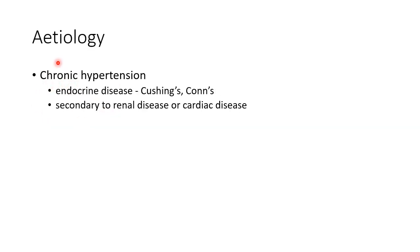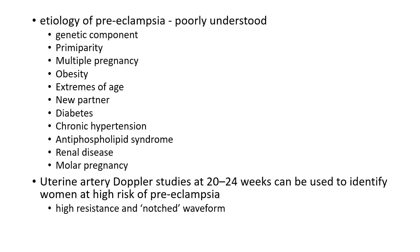Chronic hypertension can occur due to endocrine disorders like Cushing syndrome and Conn syndrome, or secondary to renal disease or cardiac disease.